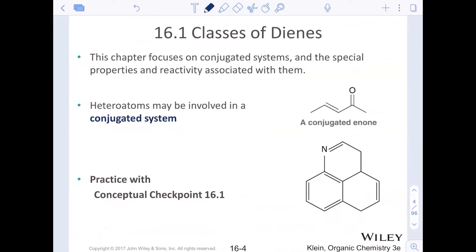Hetero atoms may be involved in a conjugated system. We'll see that later on in chapter 21 as well. So you could have two pi bonds that aren't necessarily carbon-carbon double bonds. They could be carbon-oxygen double bonds or as we see over here also on the right-hand side carbon-nitrogen double bonds.